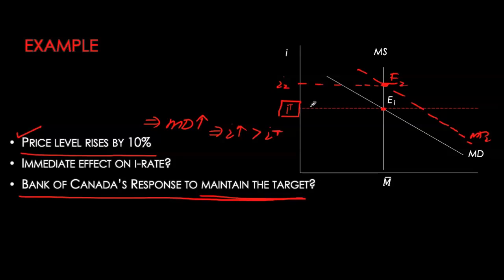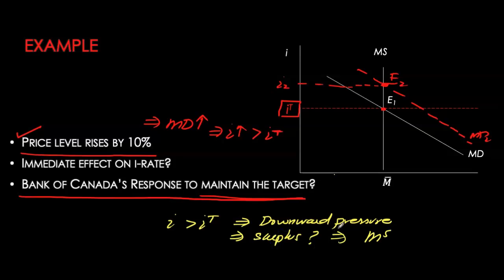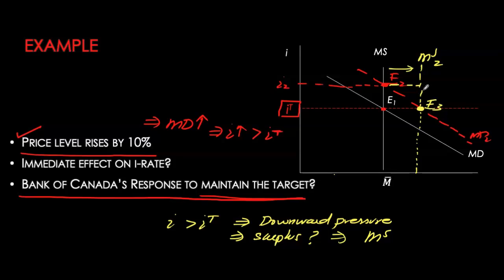The second part of the question: if the Bank of Canada wants the interest rate to return to its target, what can it do? Since the current interest rate is above target, the Bank must put downward pressure by increasing money supply — just enough to ensure the new equilibrium interest rate equals the target. Money supply increases to MS2; at i2 this creates a surplus. As the interest rate is pushed down, opportunity cost falls, quantity demanded increases along MD2, and we reach point E3 where the interest rate is back at its target.